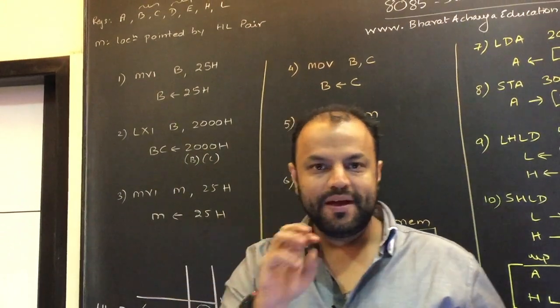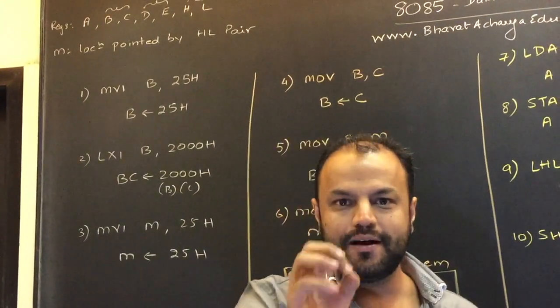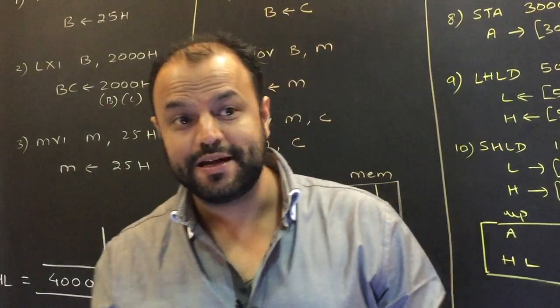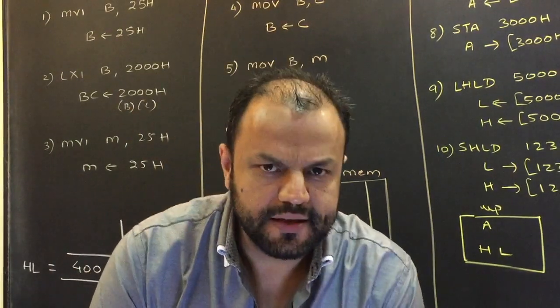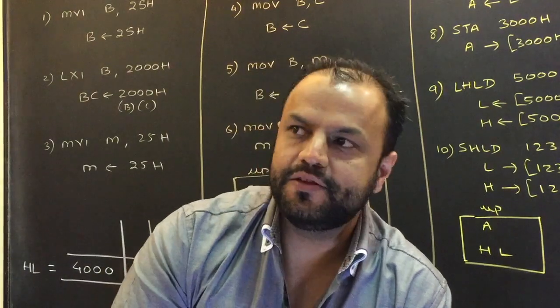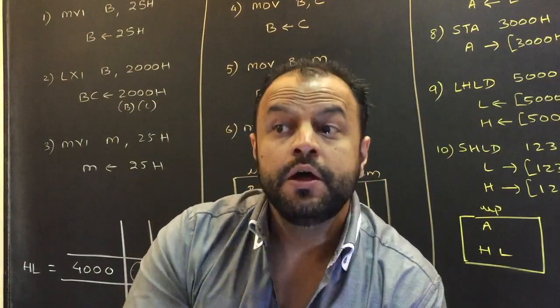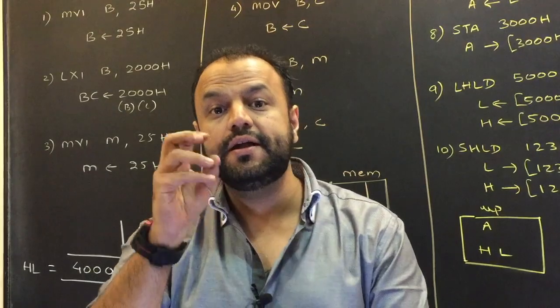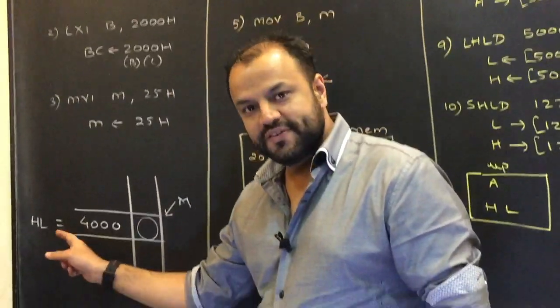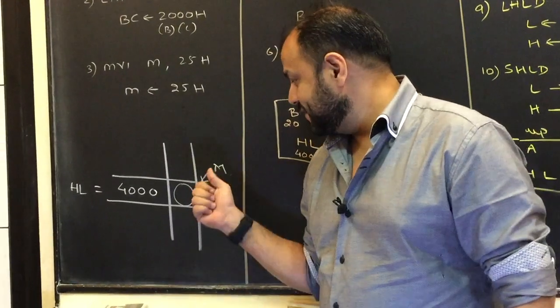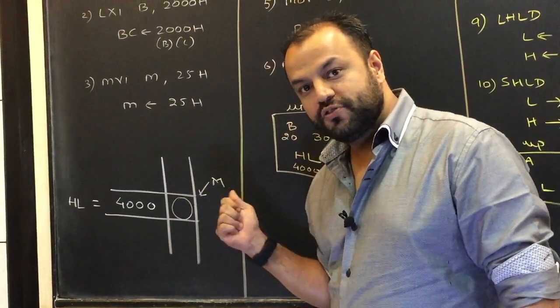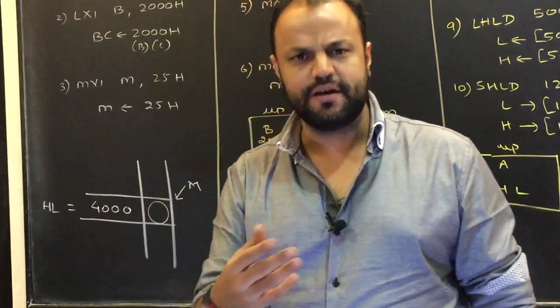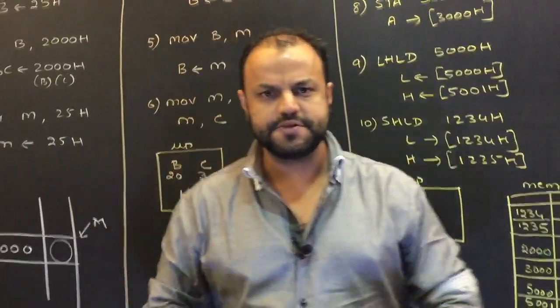Also, there is something called M. M is not a register. M is a memory location. It can be any memory location whose address is given by HL pair. So if you say you're putting something in B register, the value will go into a register. If you say you're putting something in C register, it will go into some register. But if you say you're putting something in M, the value is not going into any register. It is going to a memory location pointed by HL pair. Of course, I'm going to teach you that in detail as we see the various instructions one by one.